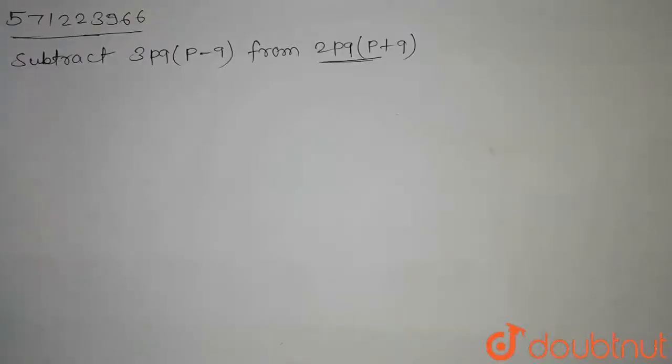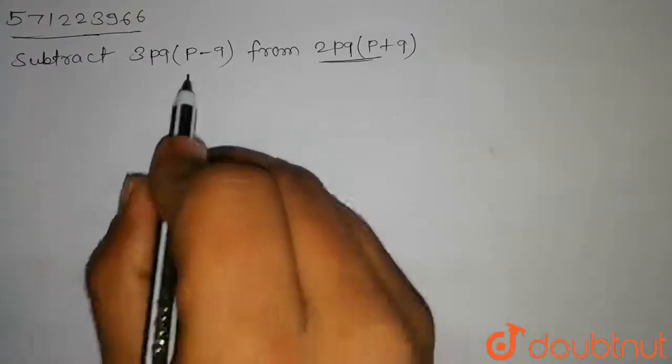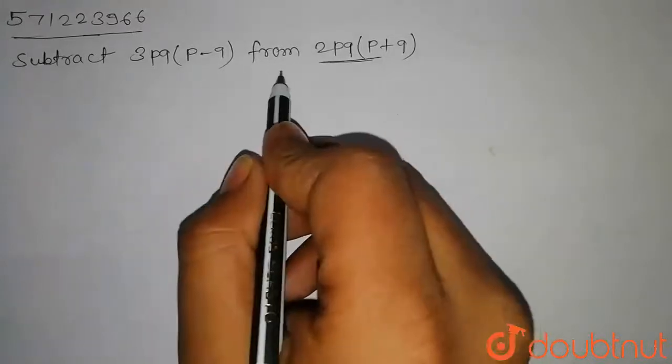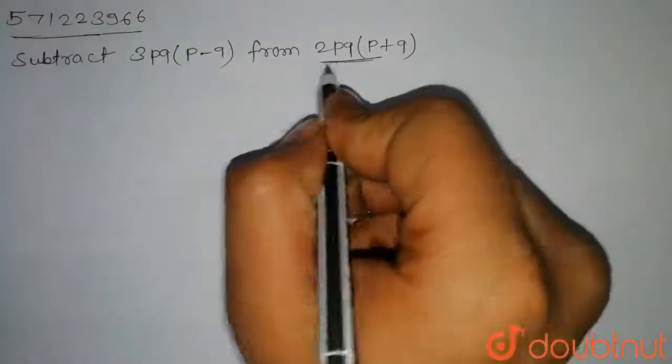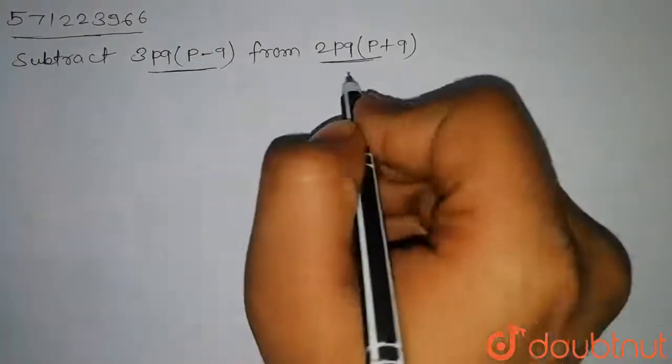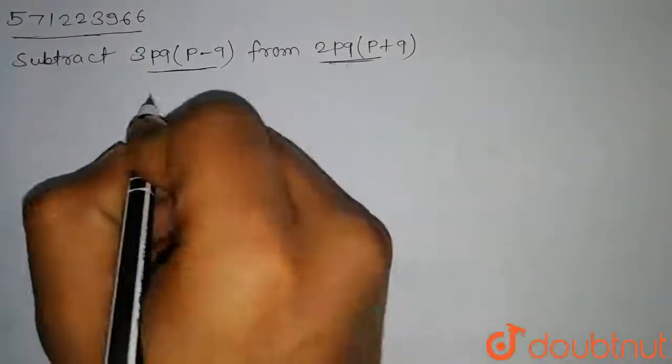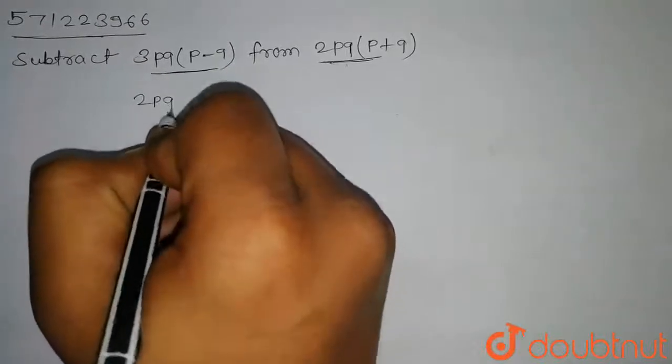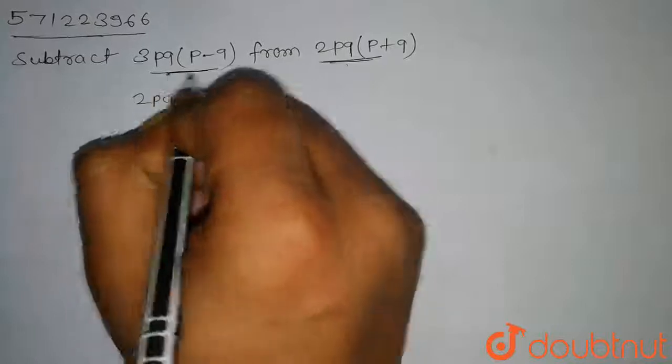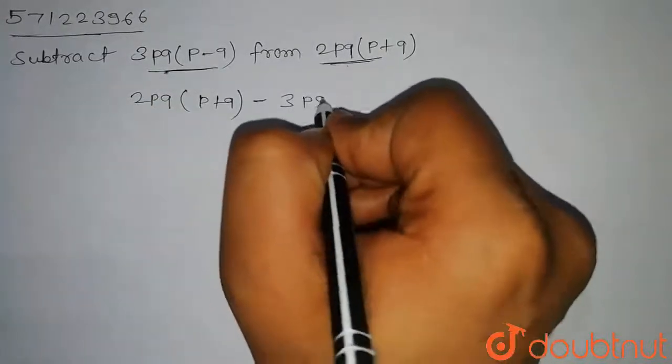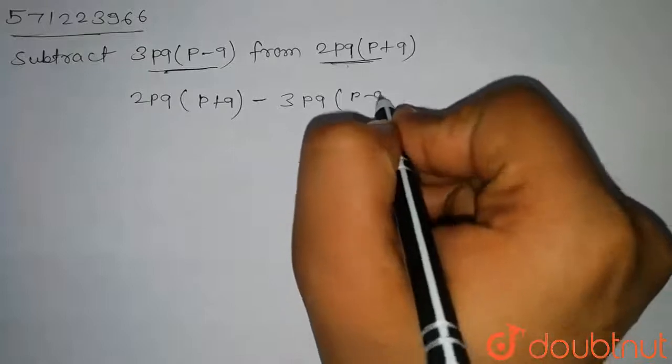Hello students, in this question we have to subtract 3pq into p-q from 2pq into p plus q, means we have to subtract this from this. So we will write first 2pq into p plus q and we will subtract this minus 3 into pq into p-q.